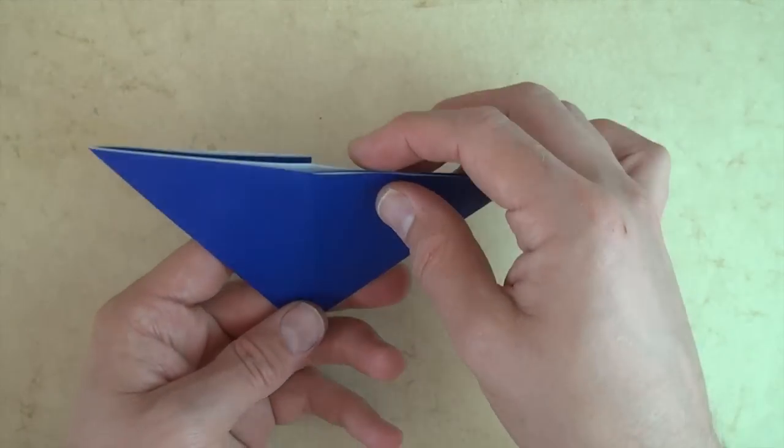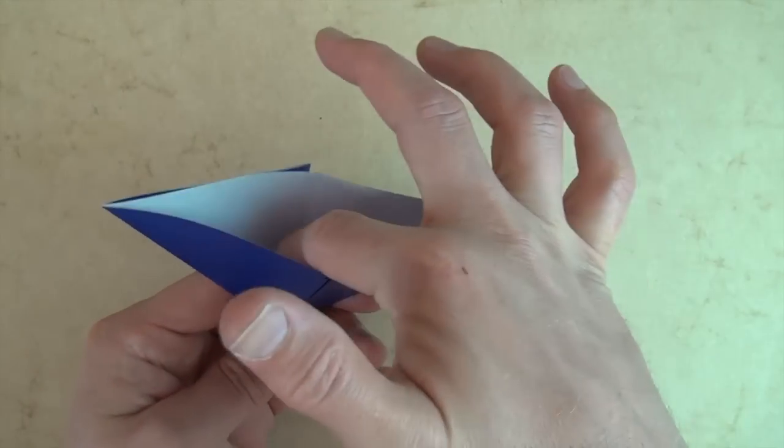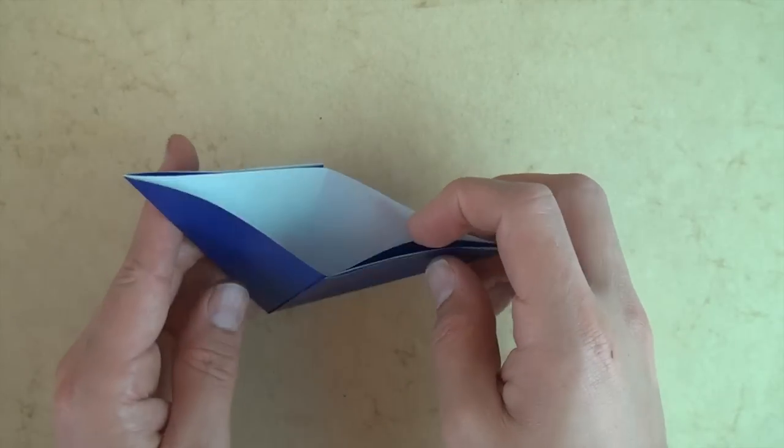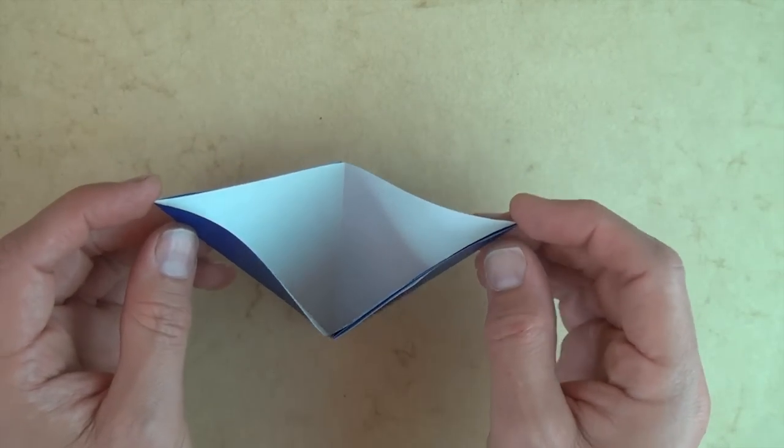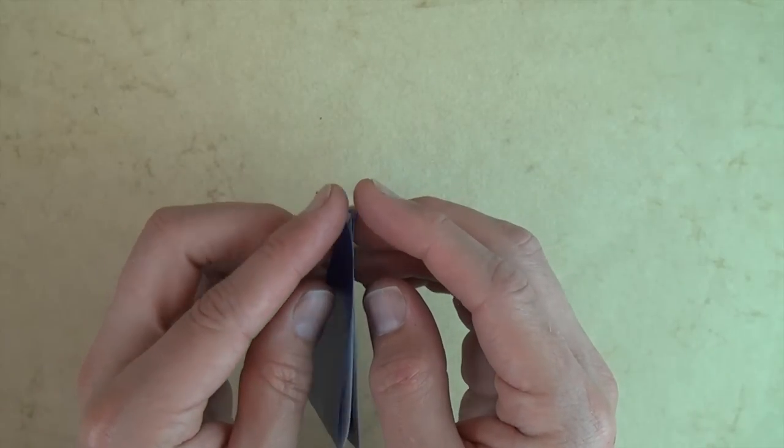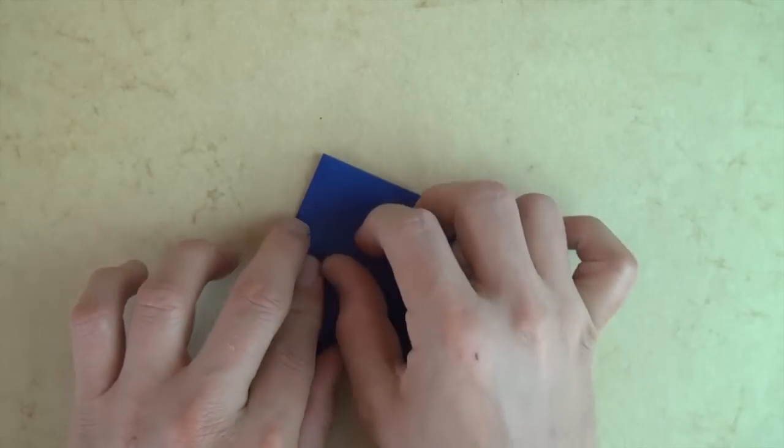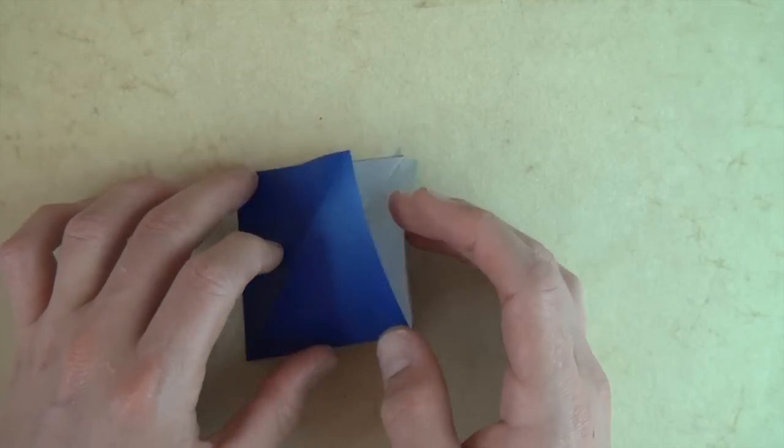And now let's tilt it up like this, open up the pocket and let's bring this point and this point together like this. And we have a square base.